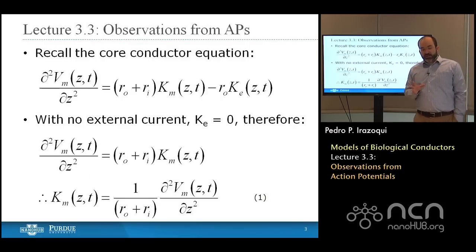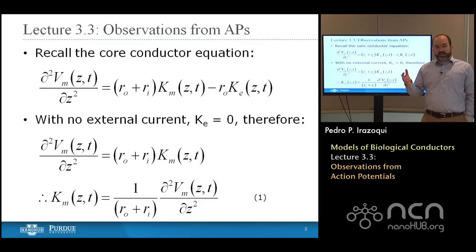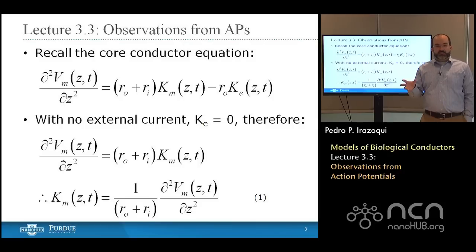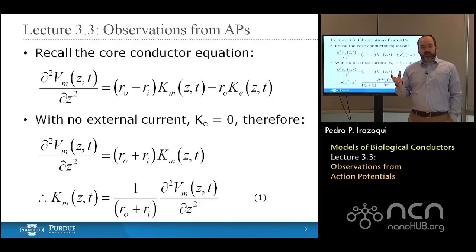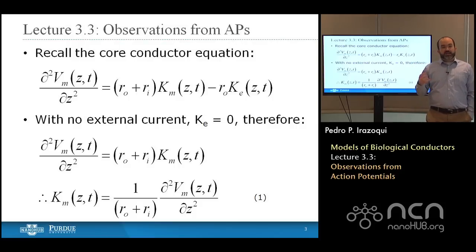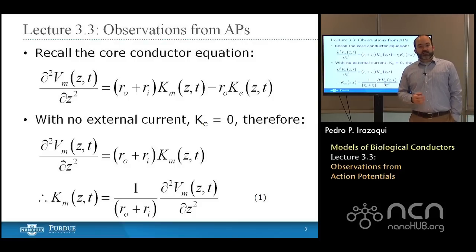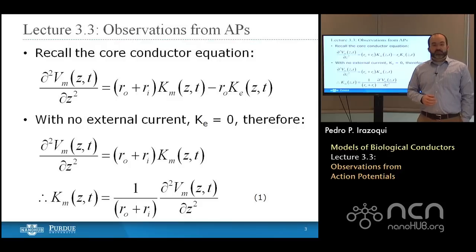In the core conductor model, we describe the relationship between the currents inside and outside the cell, the membrane current Km through the cell membrane, and the membrane voltage. But we don't say anything about what the membrane itself is made out of and what that equivalent circuit looks like. Using the observations we're going to make in this class, we're going to begin to say things about what that membrane equivalent circuit is.